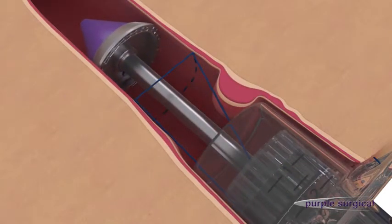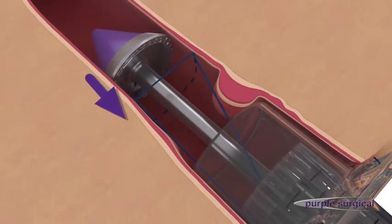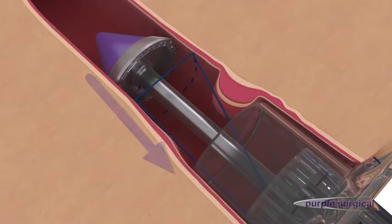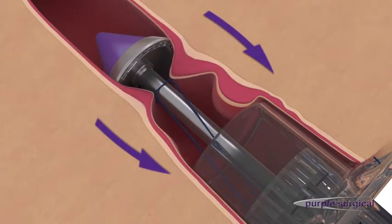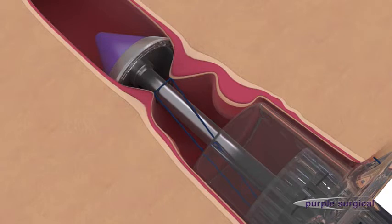Then, slowly withdraw the device until the purse string suture is visible. Pull on the sutures to close the purse string around the shaft and tie off with a single closing knot.